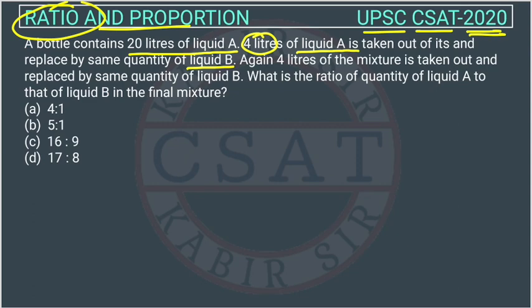So the initial situation is, suppose this is a vessel. Initially the liquid A in this is 20 and the liquid B is 0.